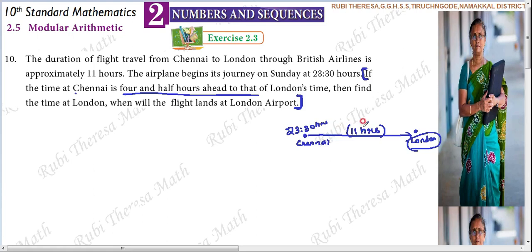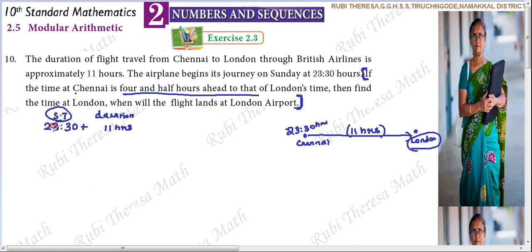First, the usual procedure is to find the destination arrival time. Starting time is 23:30 — that is the starting time. The duration is 11 hours. If you look at 23:30, it is already given in railway time, that is, 24-hour clock format. So now we go to the modular clock — mod 24.